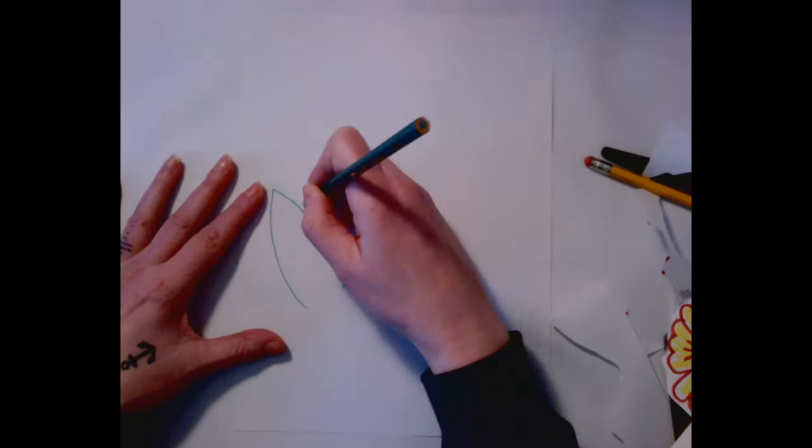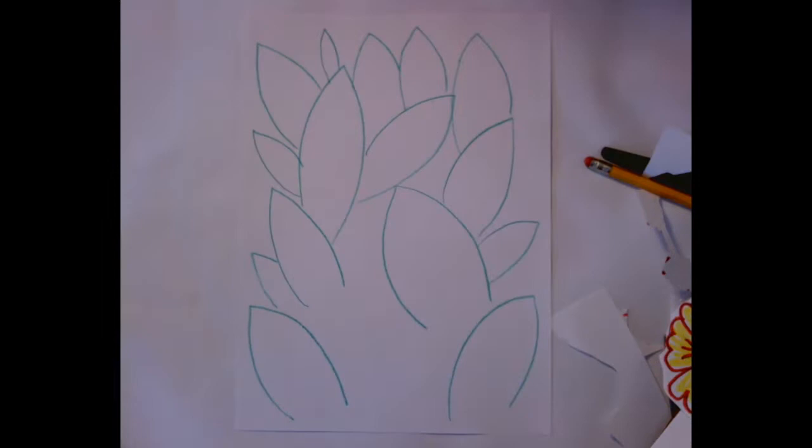We're just going to make a bunch of leaf shapes. These look like lemons. You just go over it, and then you can add the center stem and add little lines. And just play around.